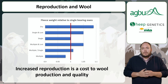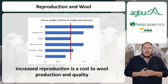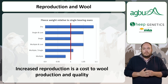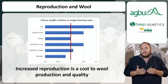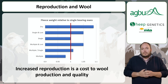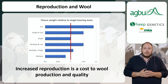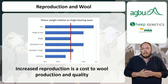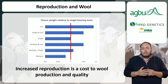Previous research has shown that ewes that fall pregnant and raise a lamb will produce a lighter and lower quality fleece. Consequently, whilst the ewe's genetic merit for wool production traits isn't necessarily declining, a flock or season showing a higher reproductive rate will be associated with a decline in wool production, as ewes prioritise the demands of reproduction ahead of wool production. This cost of wool production is now modelled far more accurately within the Sheep Object model, providing a far more accurate economic weighting on reproduction.